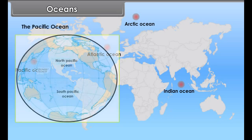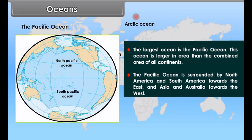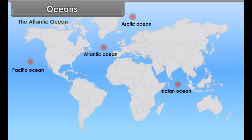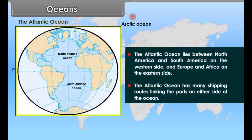The Pacific Ocean. The largest ocean is the Pacific Ocean. This ocean is larger in area than the combined area of all continents. The Pacific Ocean is surrounded by North America and South America towards the east, and Asia and Australia towards the west. The Atlantic Ocean lies between North America and South America on the western side and Europe and Africa on the eastern side. The Atlantic Ocean has many shipping routes linking ports on either side.